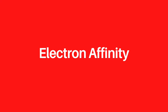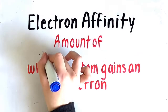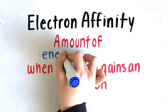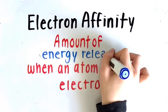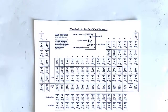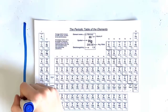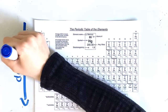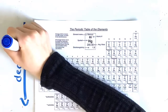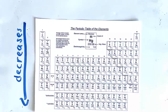Our last periodic table trend is electron affinity. Electron affinity is the measure of the attractive force an atom has for adding an electron to its valence shell. It measures the amount of energy released when an atom gains an electron. Electron affinity decreases down a group because going down the periodic table the atoms get larger, which causes more distance, more shielding, and decreased attraction between the nucleus and the added electron, causing a low electron affinity.